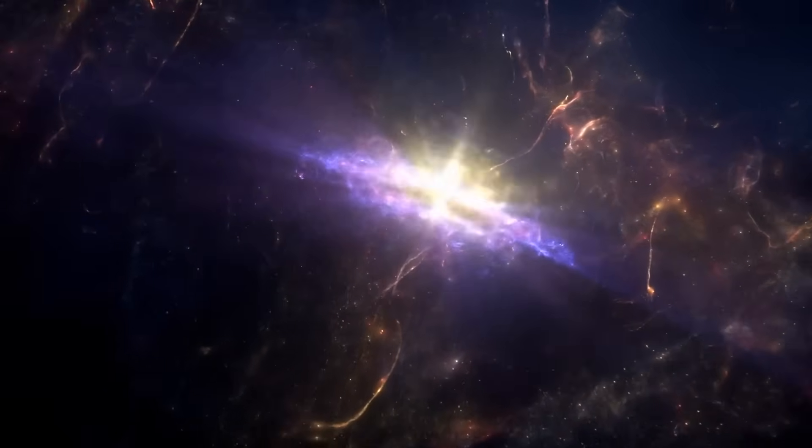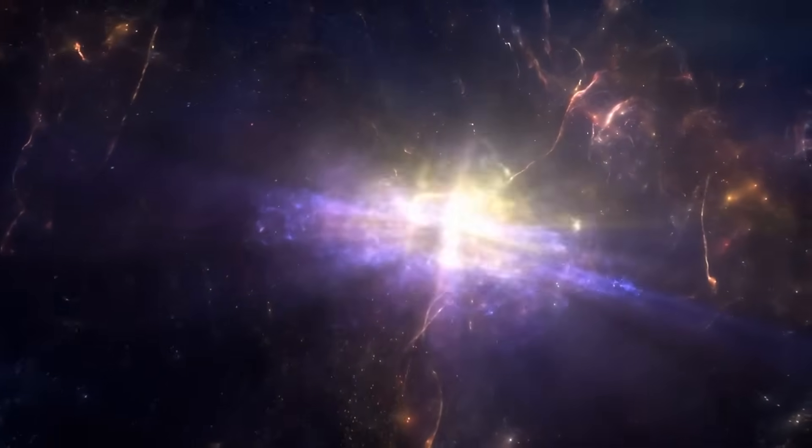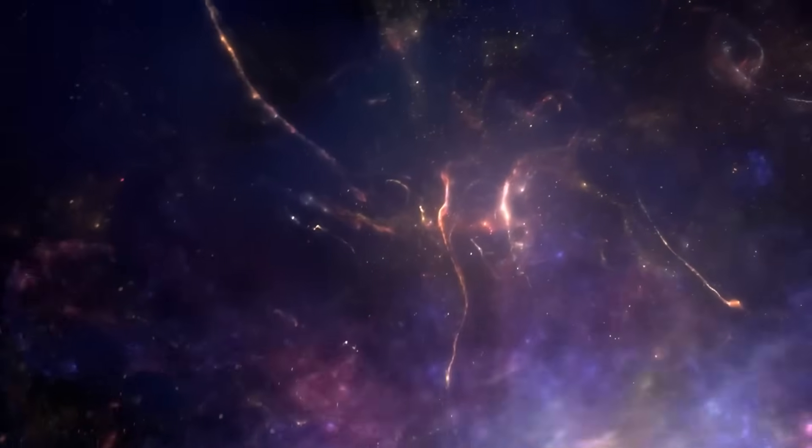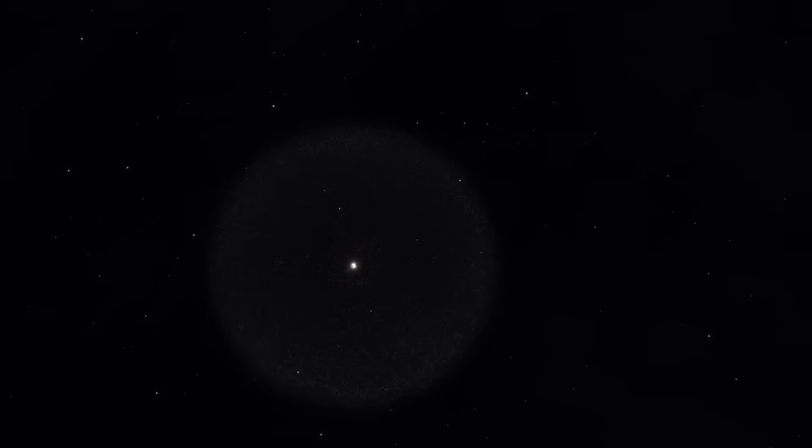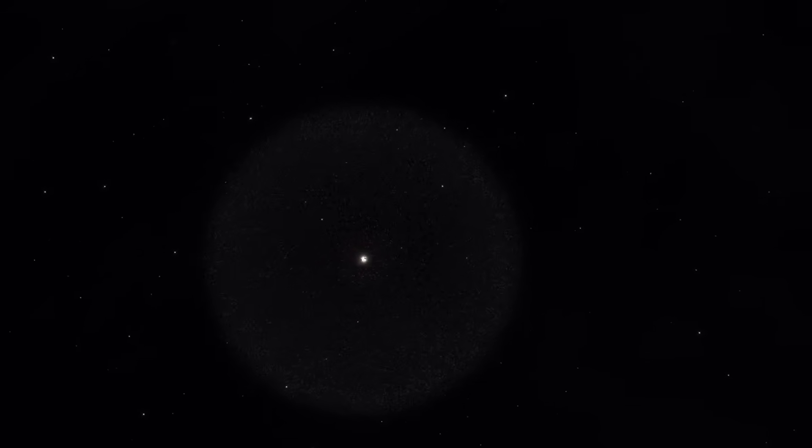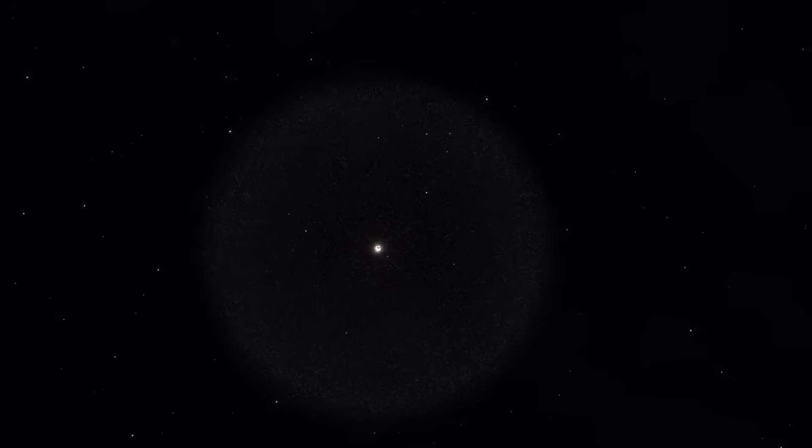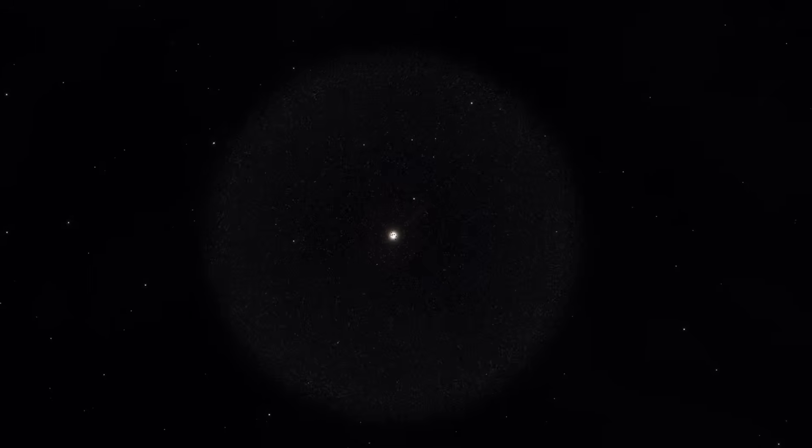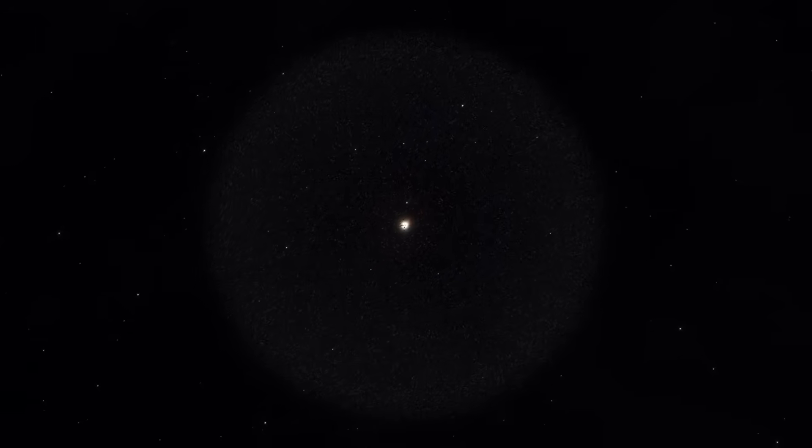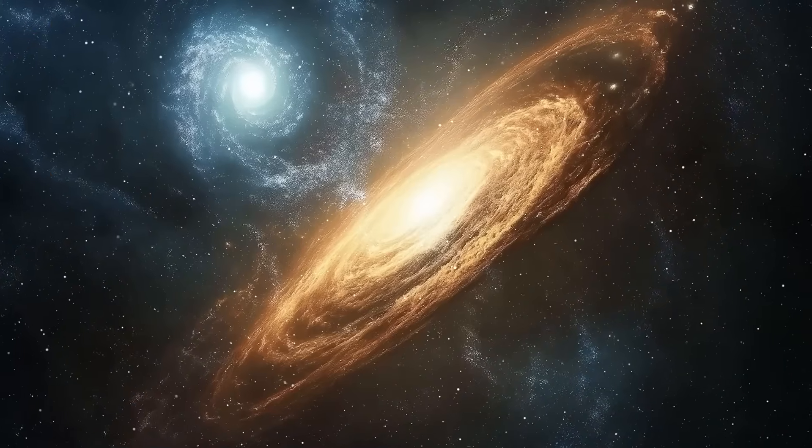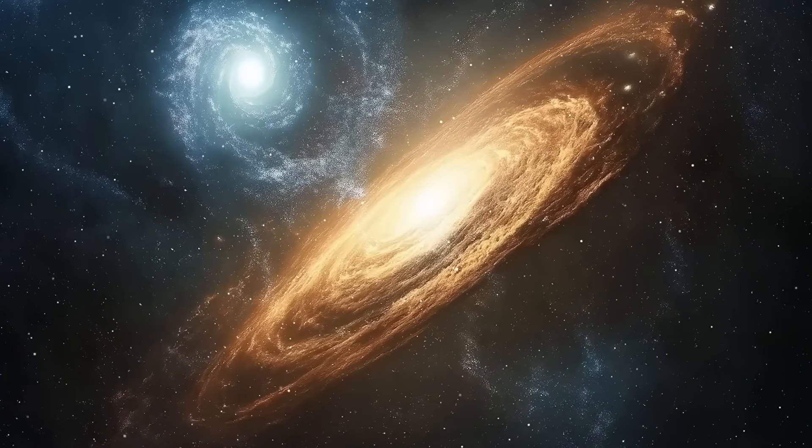What's wild is that these red monsters still fit into the Lambda CDM framework. Meaning they don't technically break the model. Instead, they show us that the early universe was far more creative and resourceful at building galaxies than we gave it credit for. It's almost like nature was running a galactic sprint before settling into the marathon pace we see later in cosmic history. And if galaxies could do this in just a few hundred million years, what else could have formed out there that we haven't spotted yet?